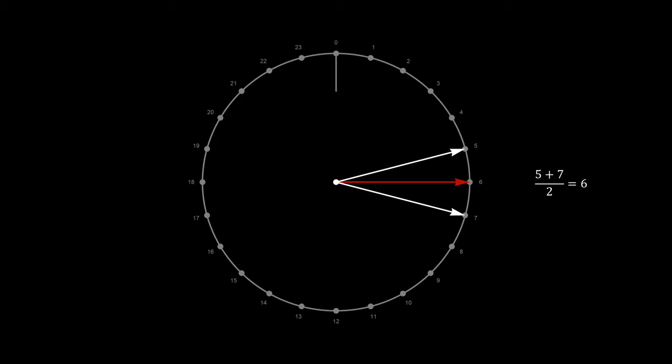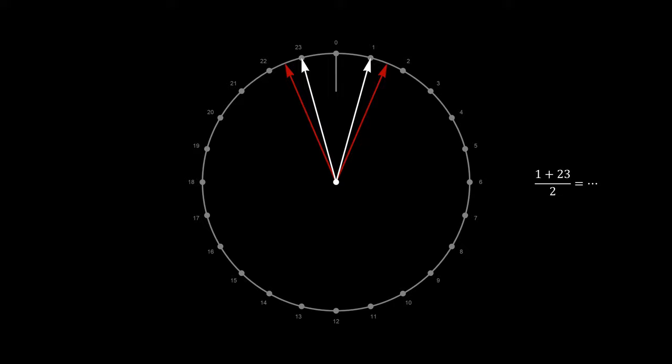Imagine a clock face that represents the times of the day. To keep things simple, let's assume the clock has a 24-hour dial. Let's say that we observed a phenomenon twice, at 5 and 7 o'clock. What is the typical time of this phenomenon occurrence then? Intuitively, the average between 5 and 7 is 6 o'clock. This result has been obtained by simply averaging two numbers: 5 plus 7 divided by 2 equals 6.